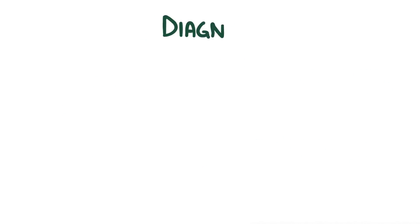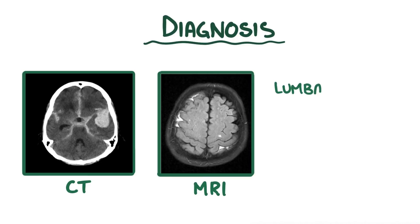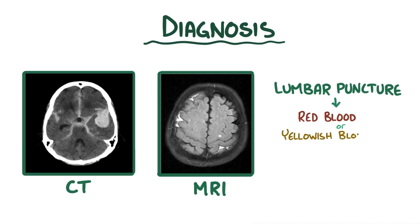The diagnosis of a subarachnoid hemorrhage is usually made with a CT or MRI scan, which usually shows blood pooling in the subarachnoid space around the damaged artery. Classically, a lumbar puncture will show red blood cells, or yellowness from bilirubin, called xanthochromia. That's because there may be fresh blood around the spinal canal, or old blood that's being metabolized and broken down.